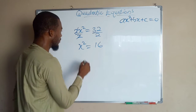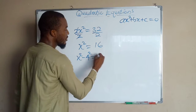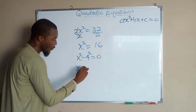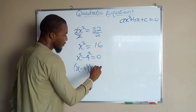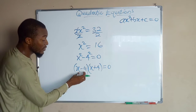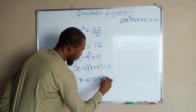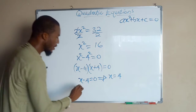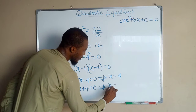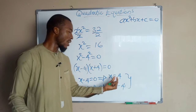Bringing it to the left side, we have x squared minus 4 squared equals 0. This is also a difference of two squares, which can be factored as x minus 4 multiplied by x plus 4 equals 0. Setting each factor equal to 0: x minus 4 equals 0 implies x equals 4, and x plus 4 equals 0 implies x equals negative 4. Hence, the real solutions for this quadratic equation are 4 and negative 4.